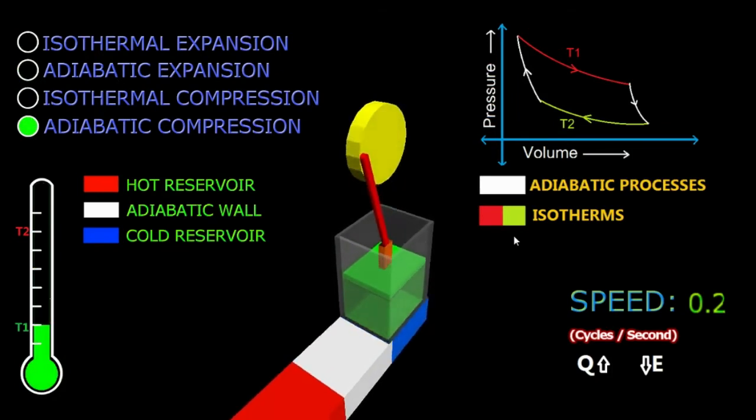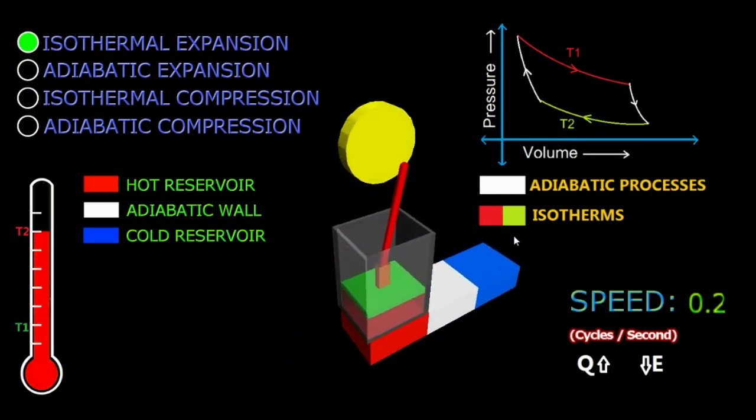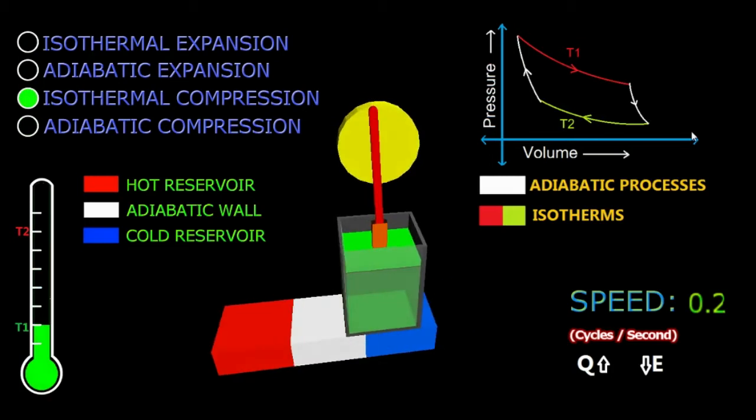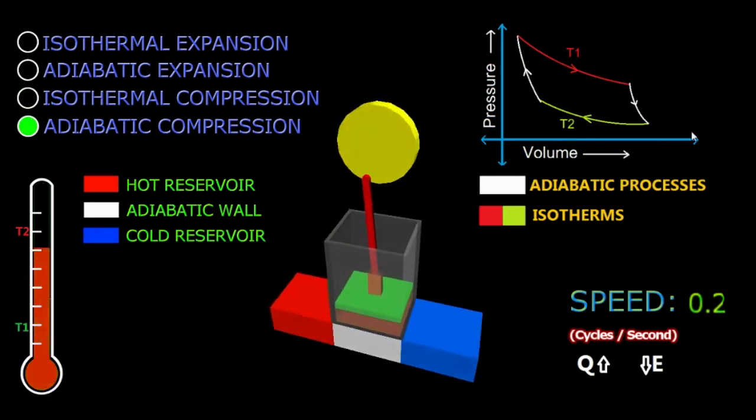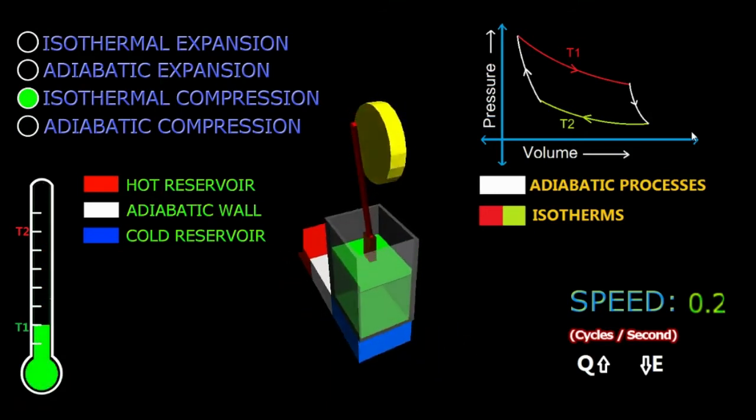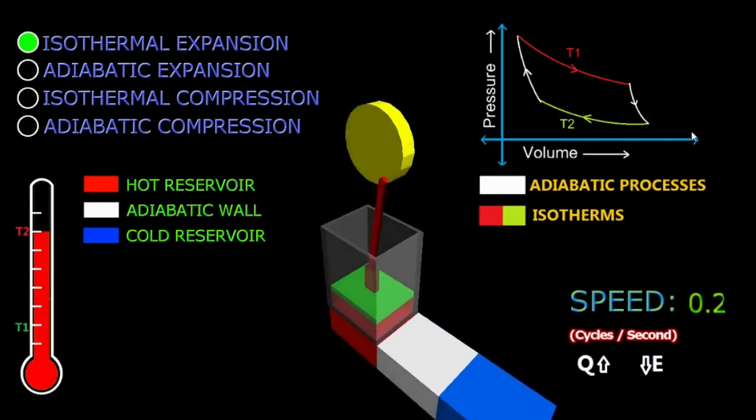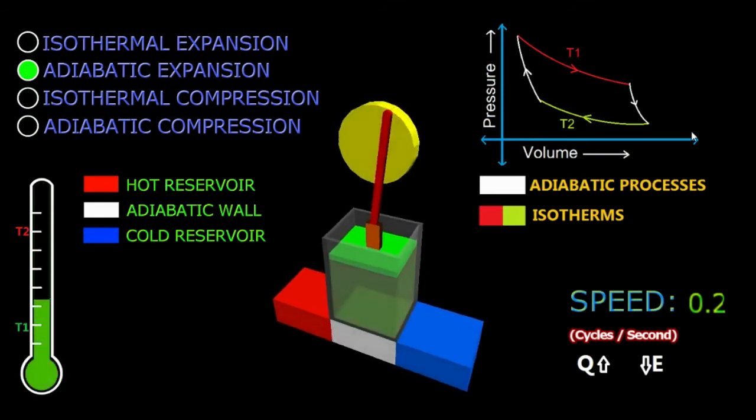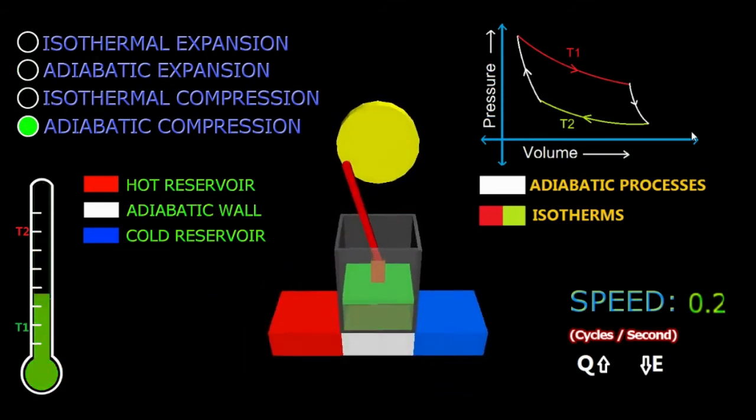On the bottom right corner you can see the small index that indicates the speed of the system. This speed is given in cycles per second. By default it's 0.2. The speed can be changed using the keys Q and E.